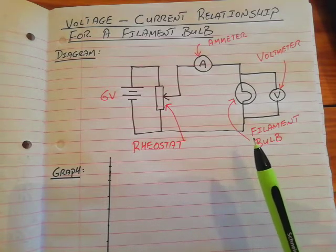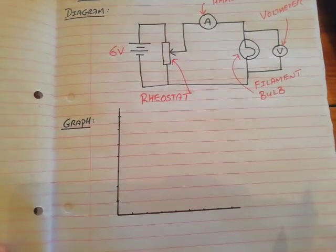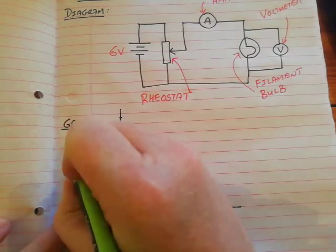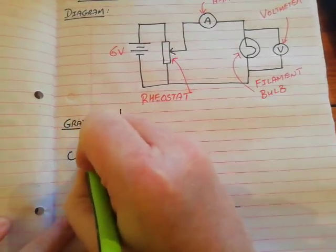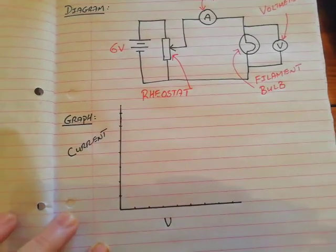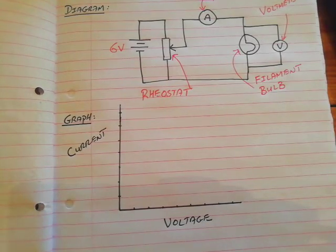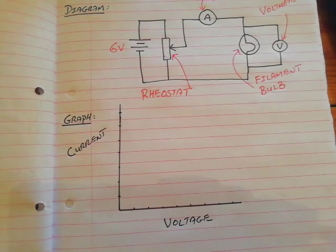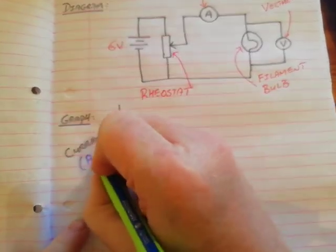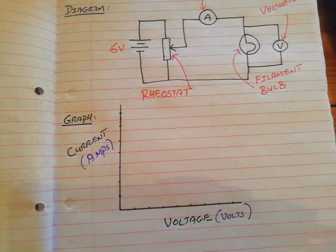Now the graph needs a little explanation because it's very interesting. This time we actually put current on the y-axis and we put the voltage on the x-axis. This is different from what we did for the metallic conductor. We always put the units, amps for current, volts for voltage.